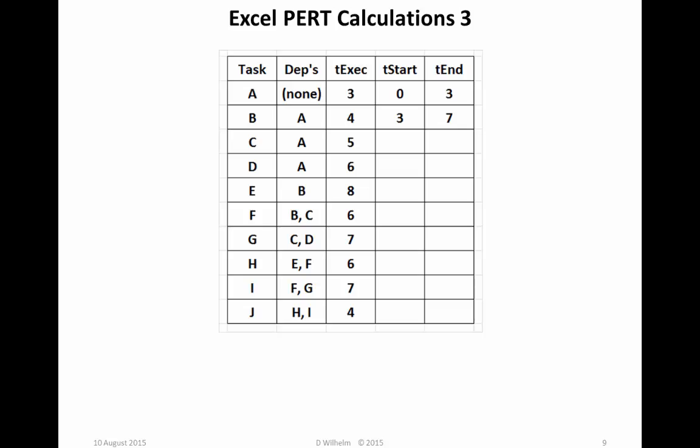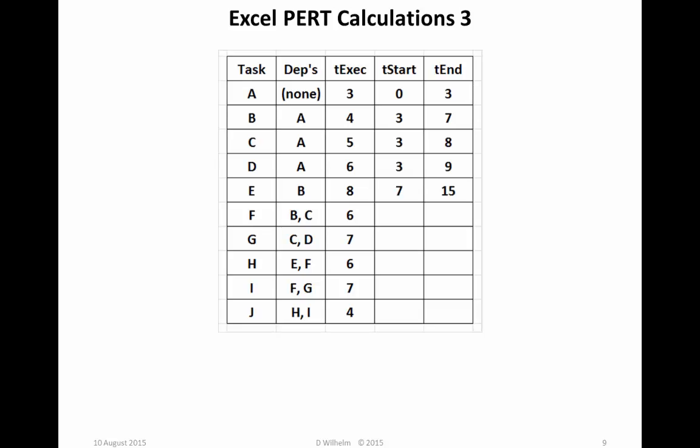The next three tasks, tasks C, D, and E, are similarly determined. Each task has a single dependency. So Time Start C equals Time End A, Time Start D equals Time End A, and Time Start E equals Time End B. The values for C are start at 3, end at 8. For task D, start at 3, end at 9. For task E, start at time 7, and end at time 15.